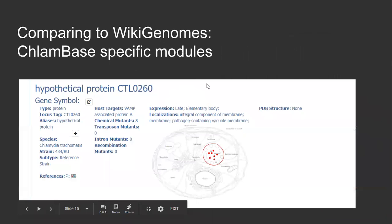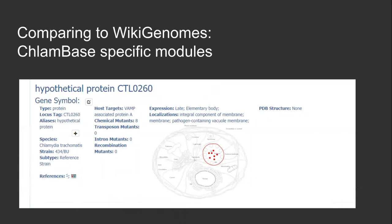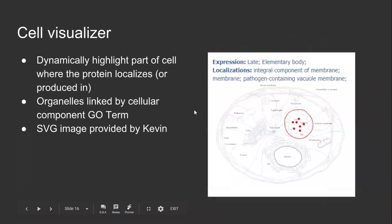For the next few slides, I will show you a brief snapshot of the new Clambase-specific modules. Here you can see the gene overview and general information about the gene, such as locus tag or alias. Inside the gene overview panel, we have the cell visualizer. Chlamydia is an intracellular pathogen, so it is useful to visualize where a protein is localized inside the host cell. The visualizer dynamically highlights host cell cellular components with the corresponding organelles, and also highlights where proteins are expressed, in either the reticulate body or the elementary body.